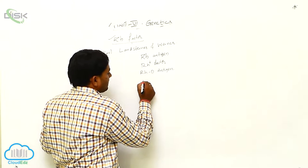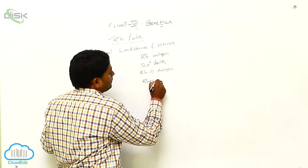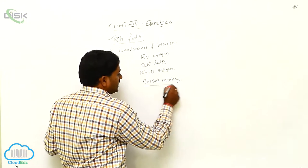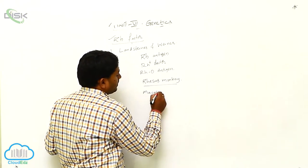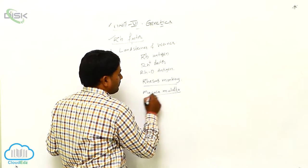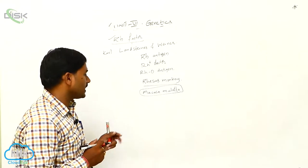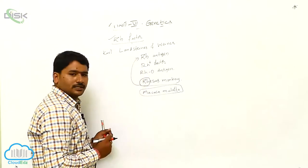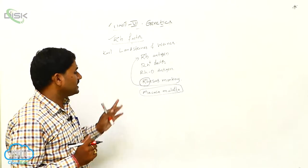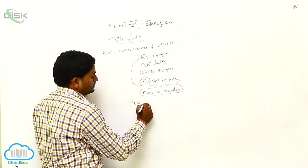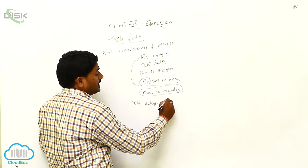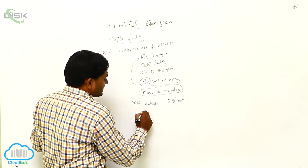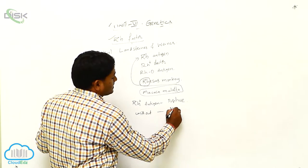The RH antigen was discovered on the plasma membrane of RBC. Individuals with RH antigen are called a positive blood group. Individuals without RH antigen are called negative blood group.